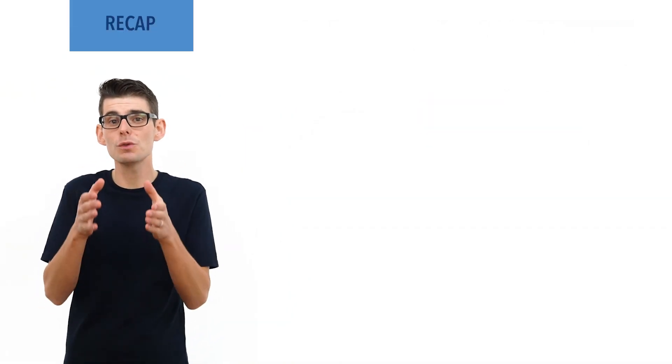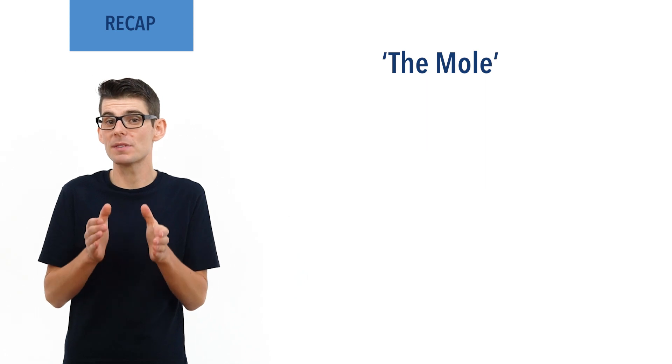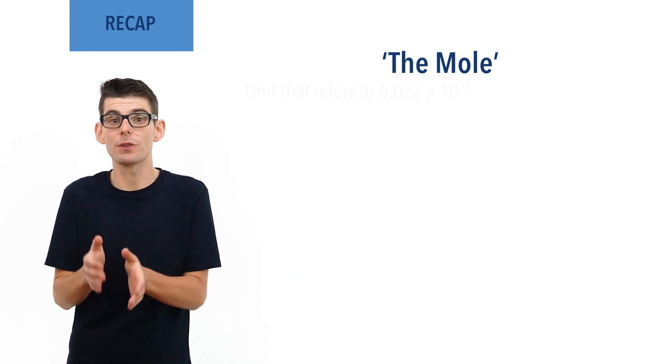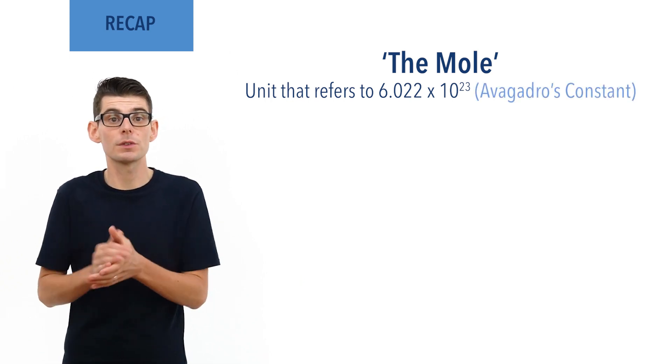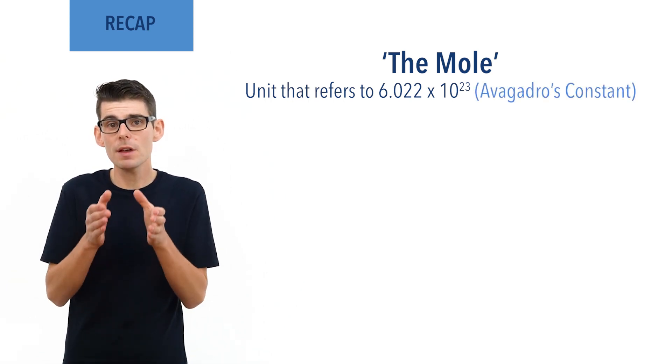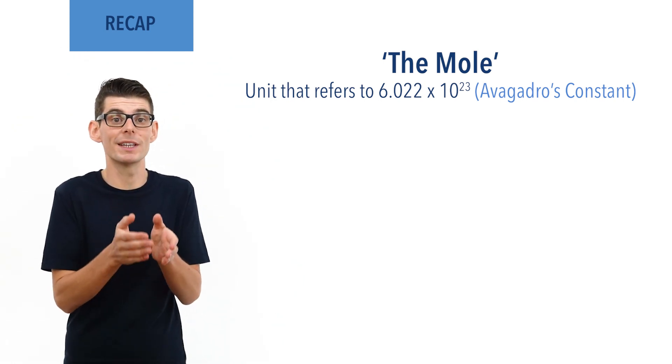Before we talk in detail about concentration, it is essential you are comfortable with the idea of the mole. The mole as well as other mole-based calculations have been covered in separate videos — check the links in the description below. As a quick refresh, the mole is a term used to describe 6.022 × 10²³ of something. This value is known as Avogadro's constant and comes from the number of atoms in a sample of an element that has the same mass value as the element's relative atomic mass.